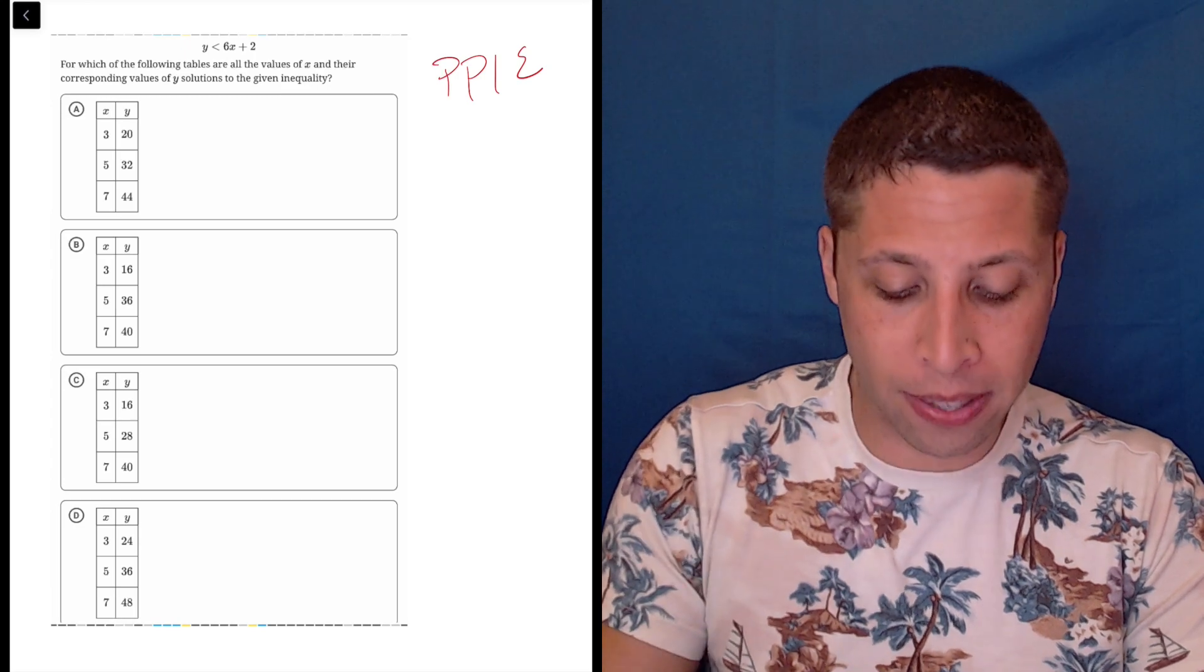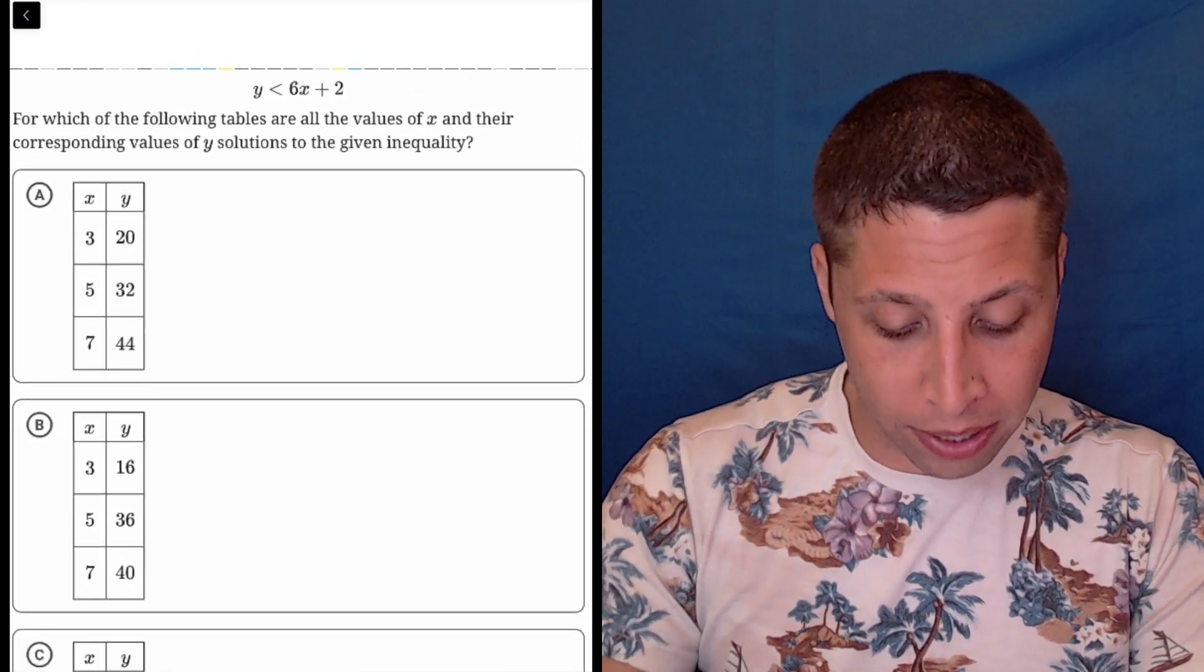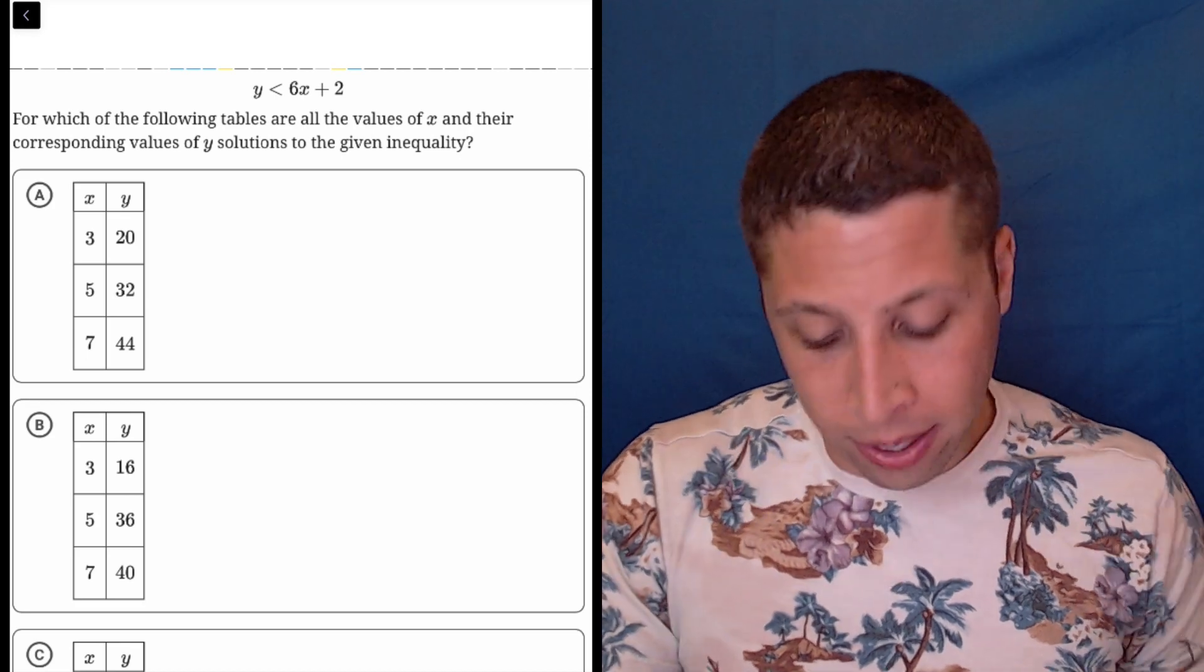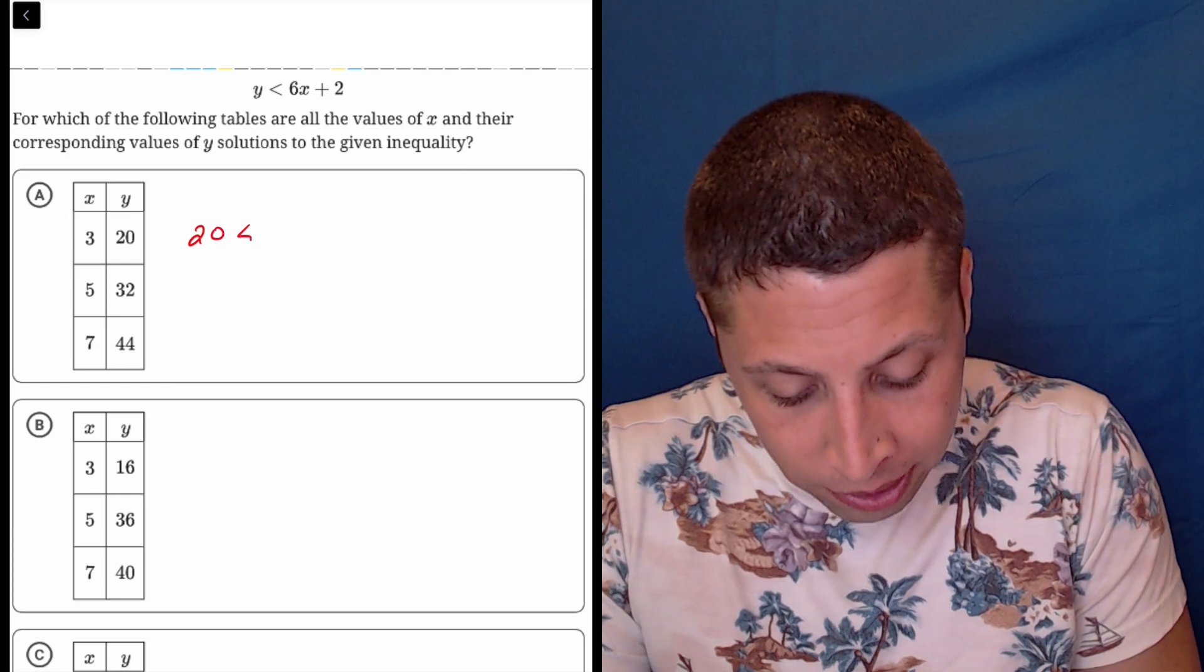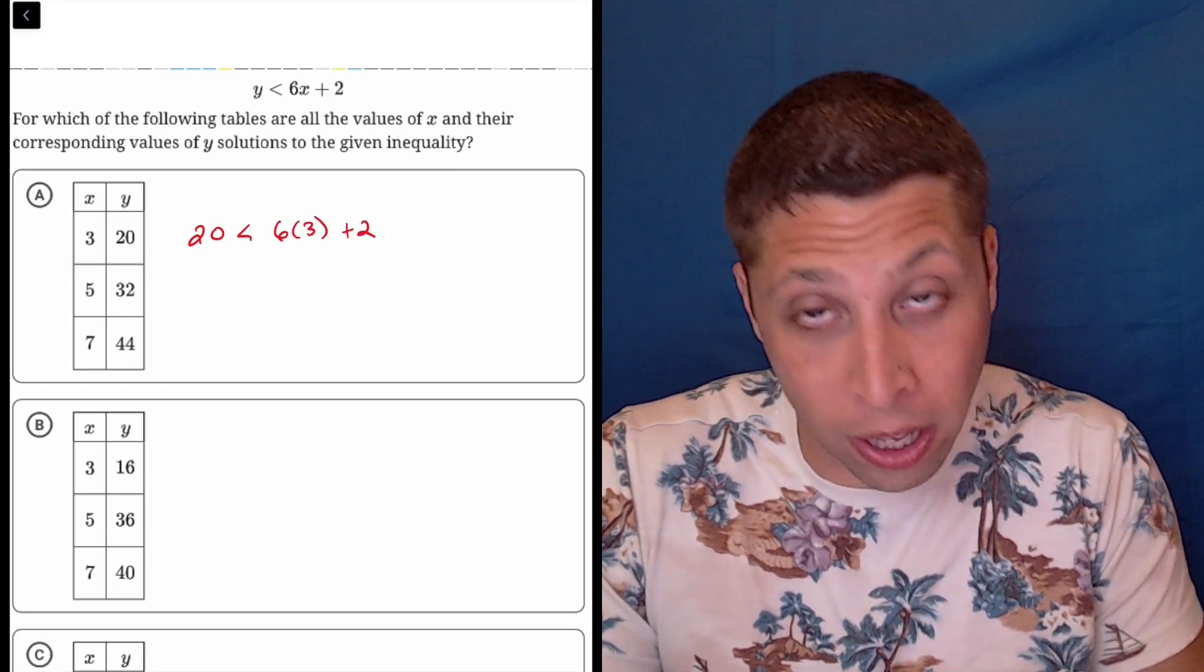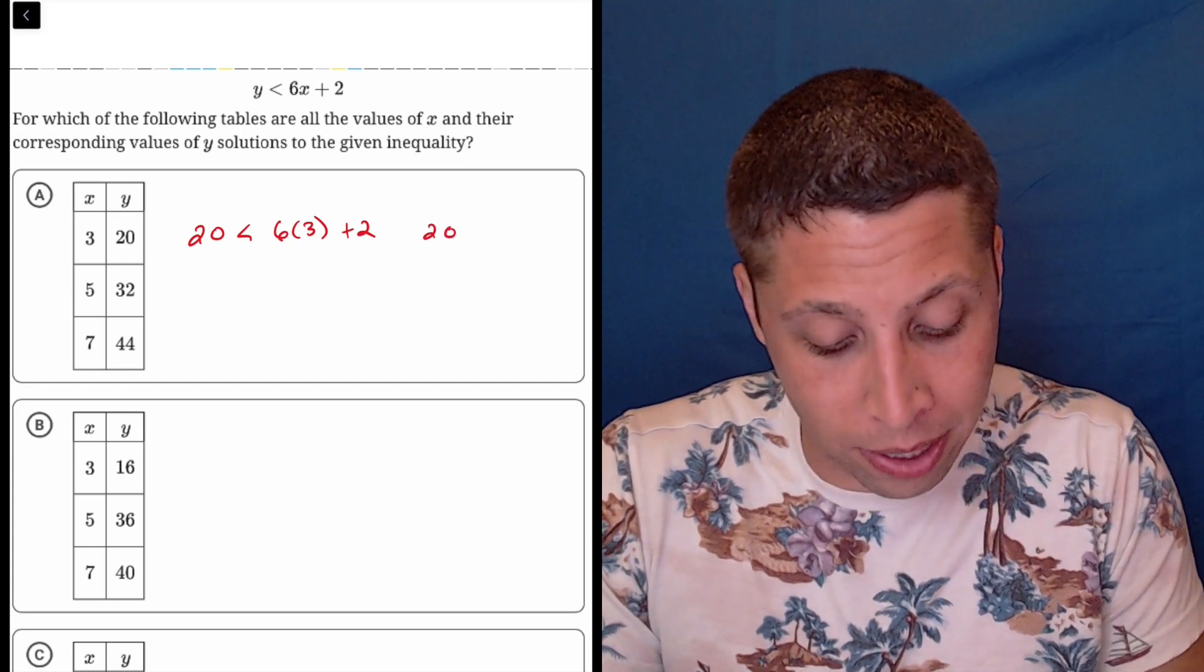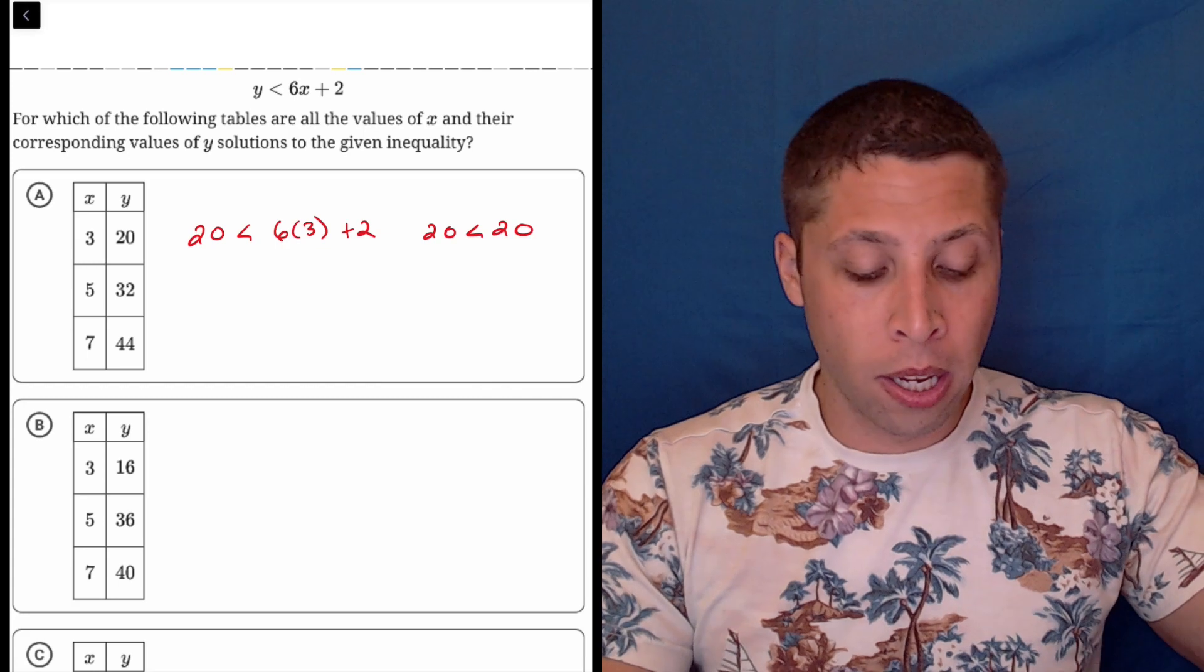Let's see what happens instead of trying to logically think this through. If we zoom in on choice A, we are given these x's and y's. Let's try the simplest one. If we do 20, that's our y, and then there's less than 6 times 3 plus 2. You could use your calculator or 6 times 3 is 18 plus 2 is 20.